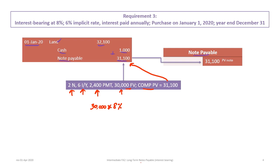We track the note payable account with a beginning balance of $30,100. When the note matures, this balance will need to be $30,000, which means we'll need a series of debits corresponding to the amortization of the premium.